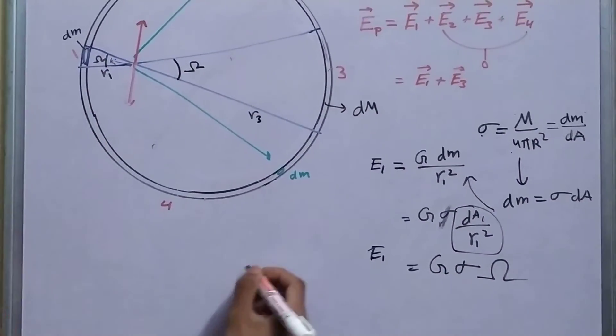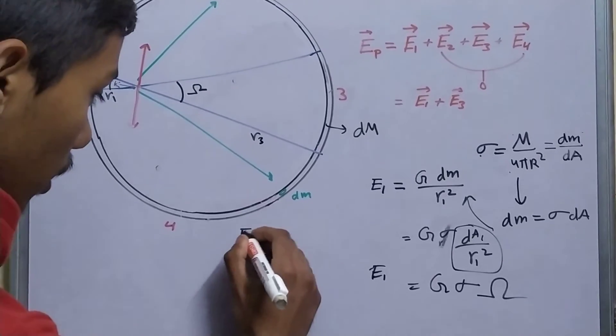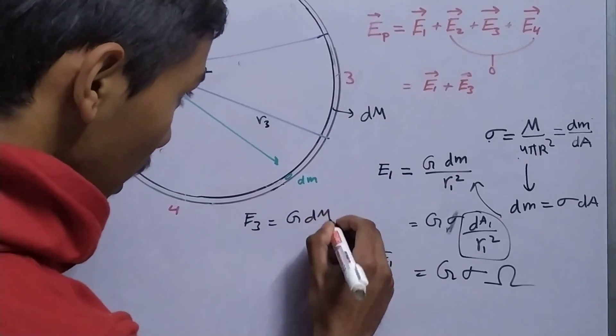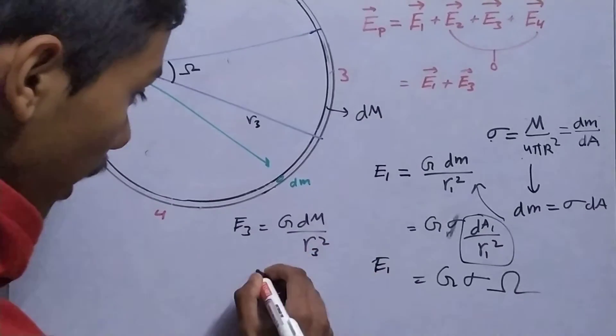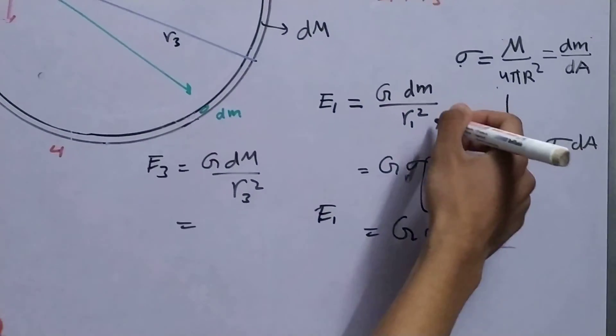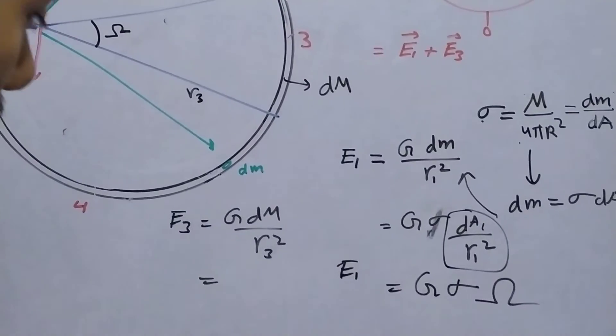Similarly, for E3, you can do the same procedure. E3 will be g, this d capital M upon r3 square, d capital M will be sigma times dA3.